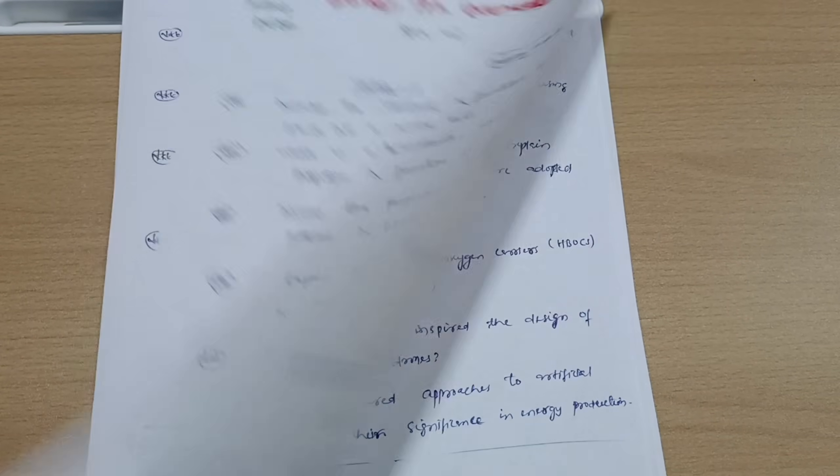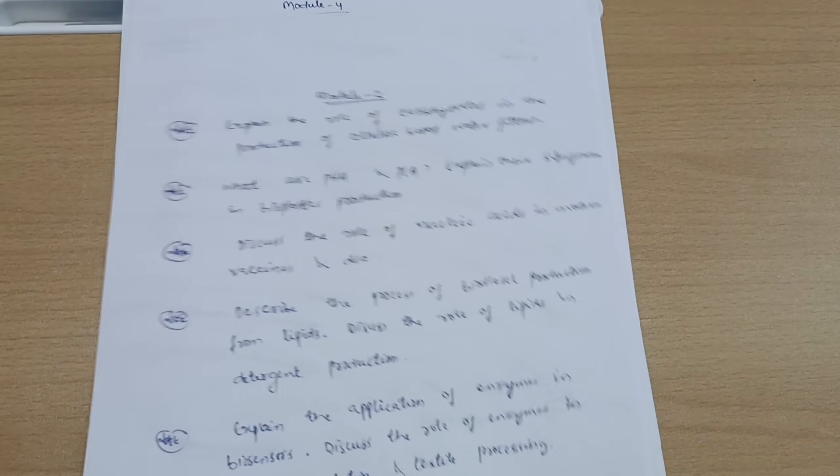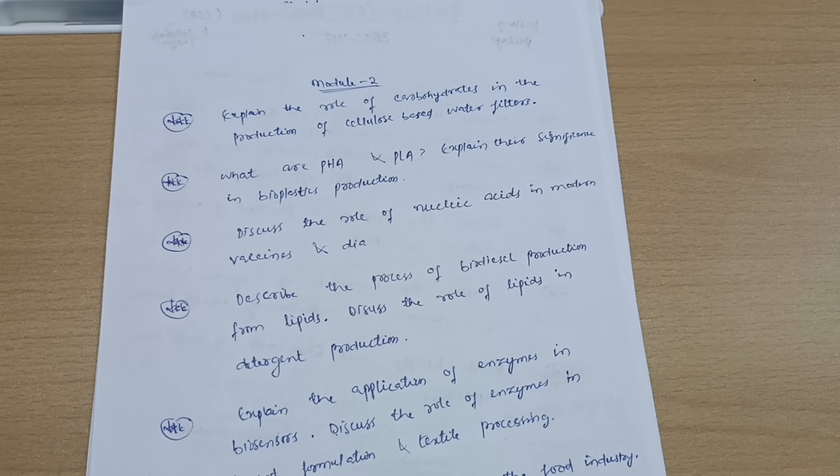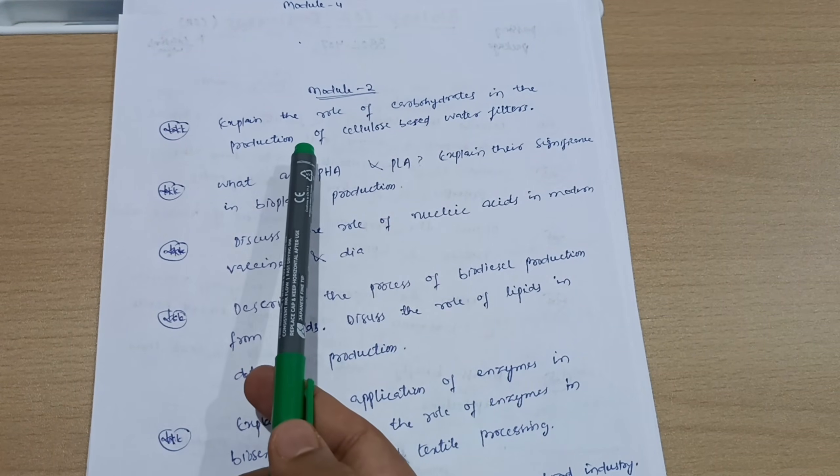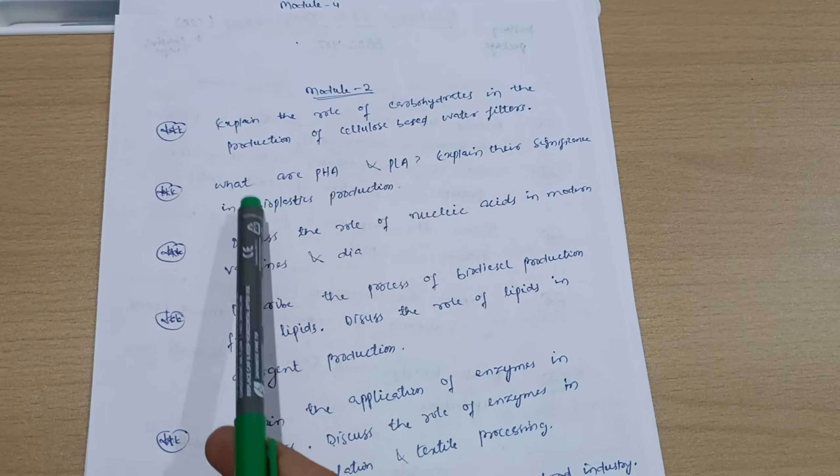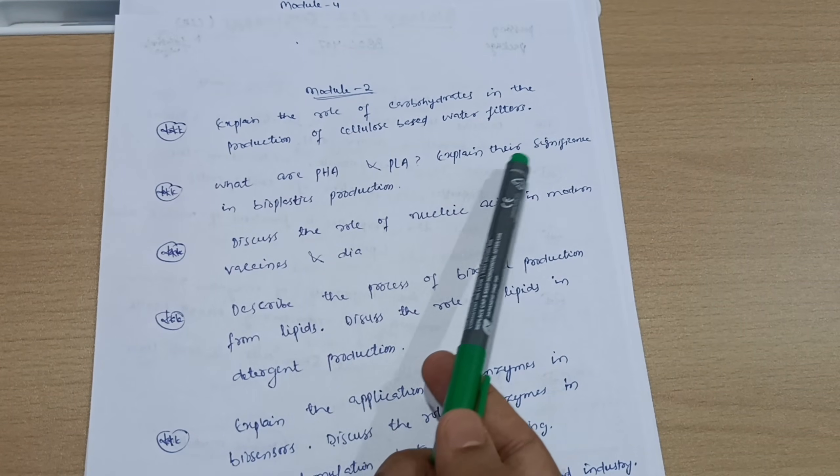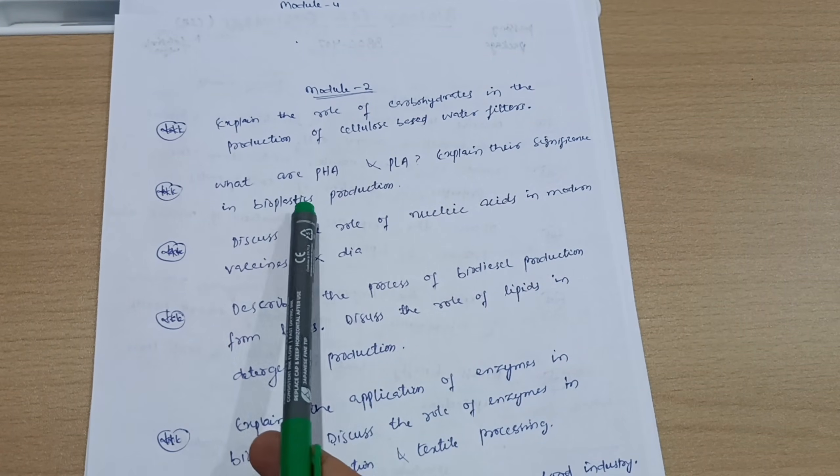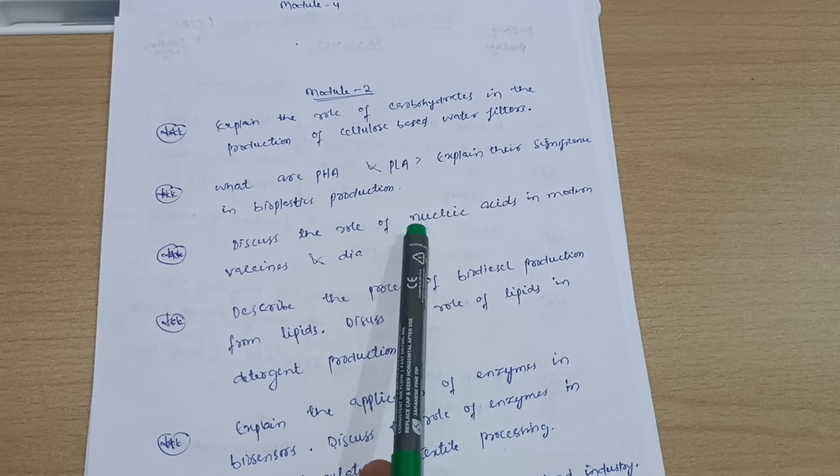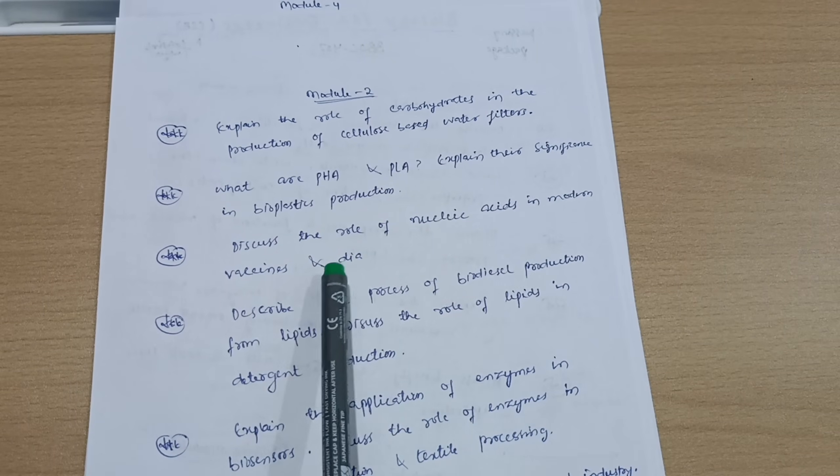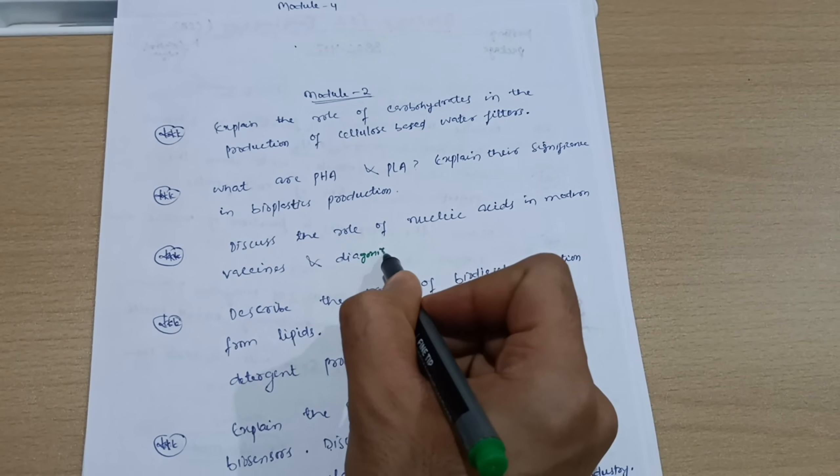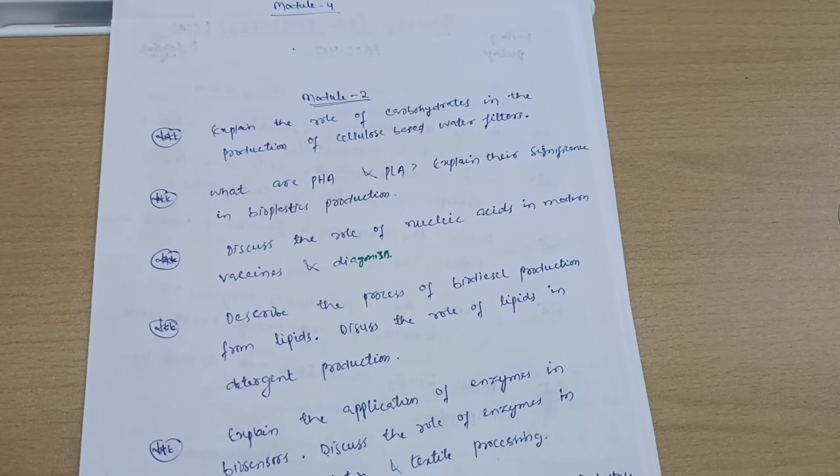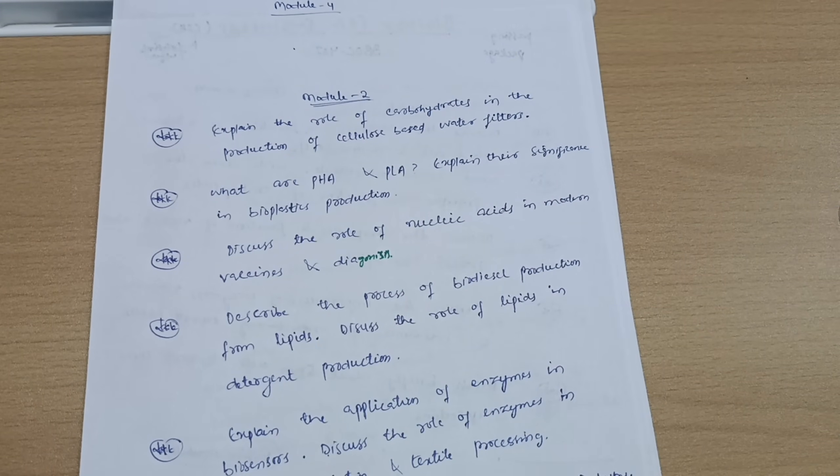Next is Module 2. We have six questions, probably. Explain the role of carbohydrates in the production of cellulose-based water filters. What are PHA and PLA? Explain their significance in bioplastics production. Discuss the role of nucleic acids in modern vaccines and diagnostics. I have not written diagnostics here, I need to add that.